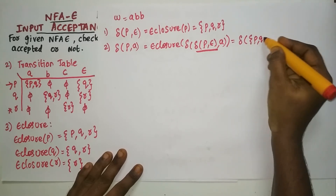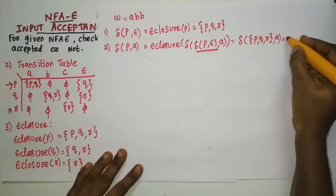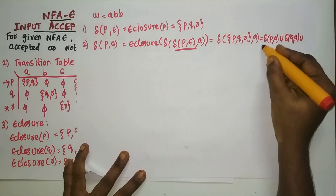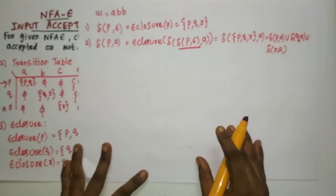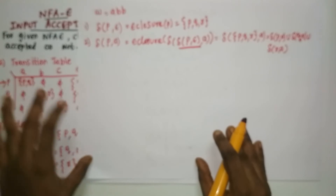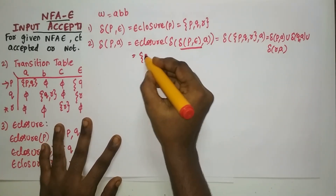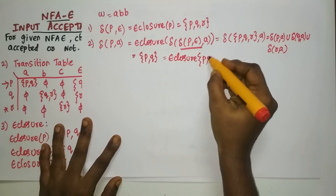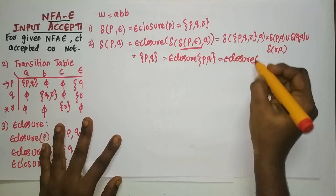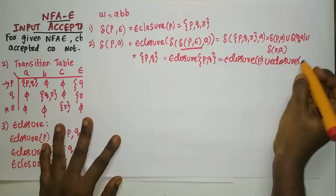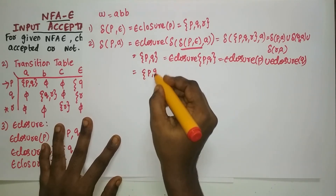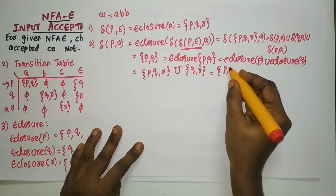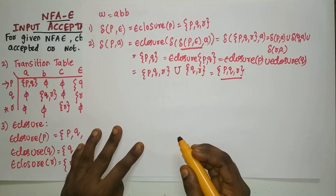Now delta-hat of P comma A equals epsilon closure of delta of {P, Q, R} on A, which equals delta of P comma A union delta of Q comma A union delta of R comma A. Delta of P on A is {P, Q}, delta of Q on A is empty, and delta of R on A is empty. So we have {P, Q}, and taking epsilon closure: epsilon closure of P union epsilon closure of Q equals {P, Q, R} union {Q, R}, which equals {P, Q, R}.